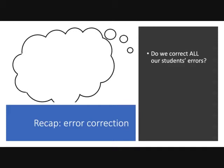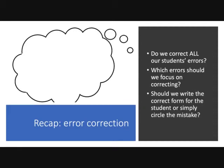Remember, do we correct all our students' errors? As we're correcting, which errors should we be focusing on? And should we write the correct form for the student, or simply circle or highlight the mistake?